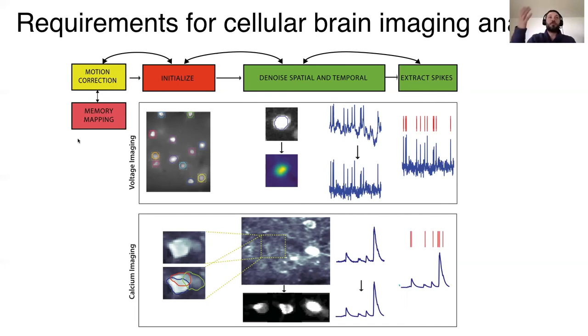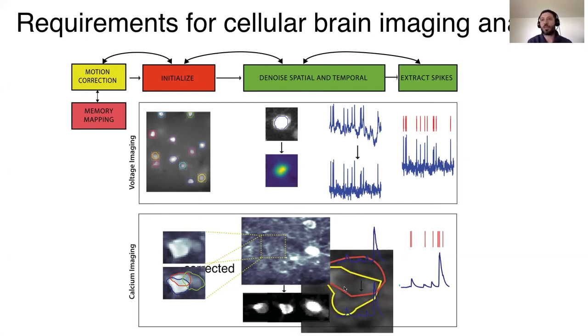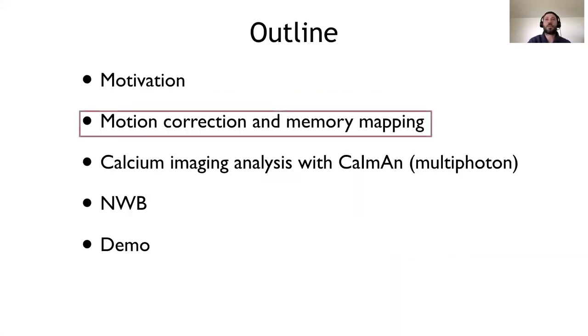So I was mentioning, we have very large movies, so we want to be able to handle them without loading them into memory. We want to find where the neurons are. We want to be able to denoise, separate the different components, the different neurons that might even overlap. And then we want to extract the spikes and try to increase the signal to noise ratio as much as we can. Let's go to the first operation that is motion correction.